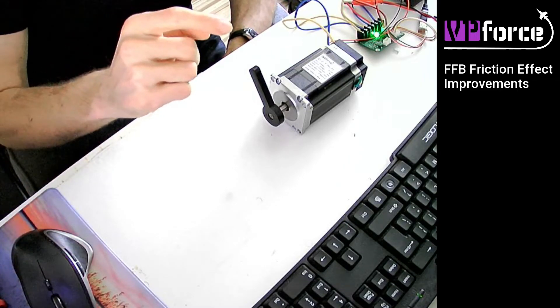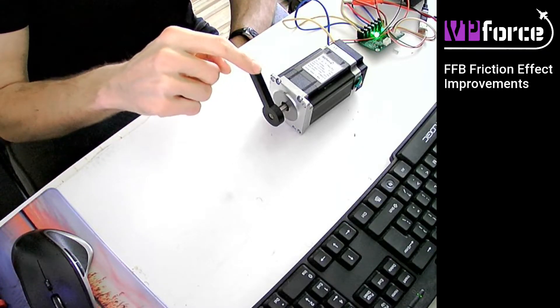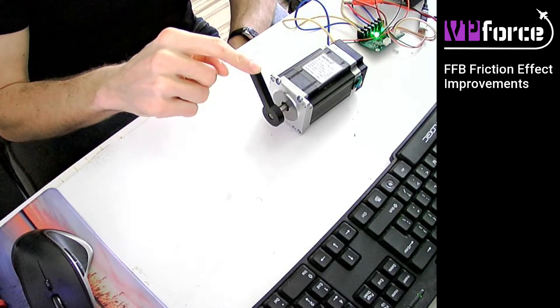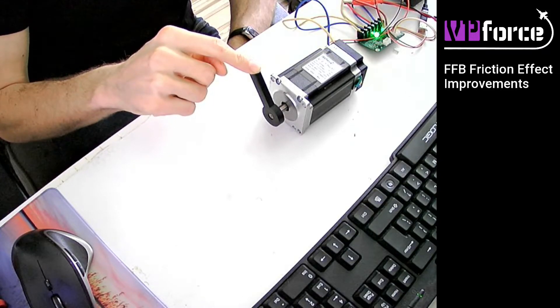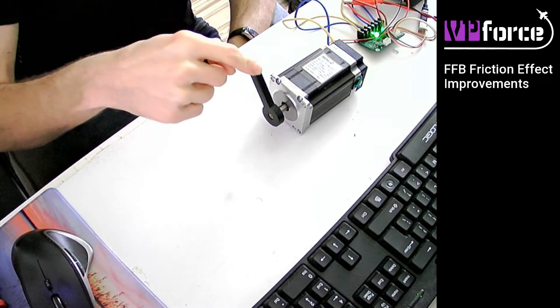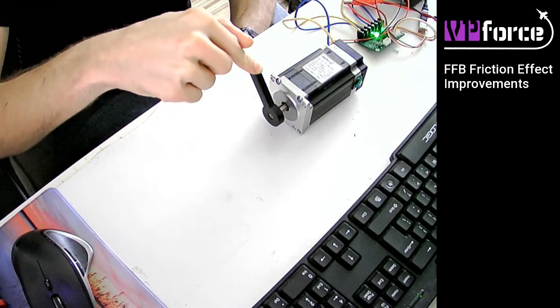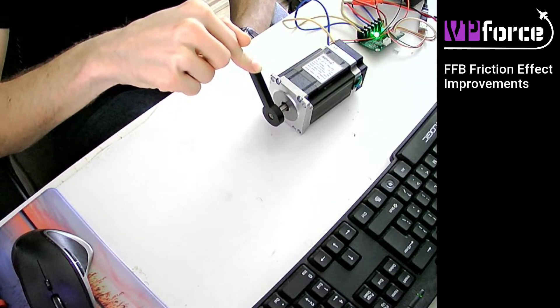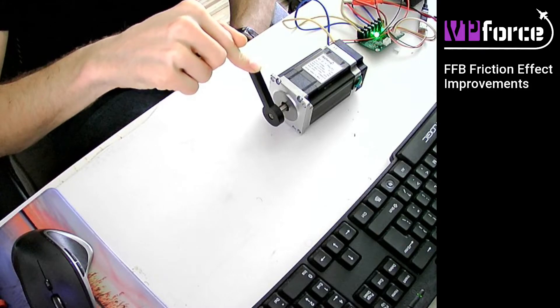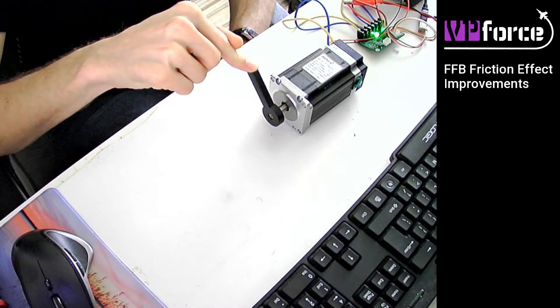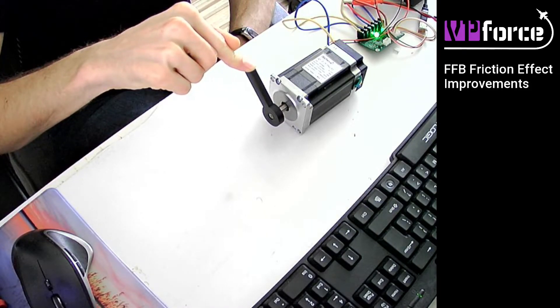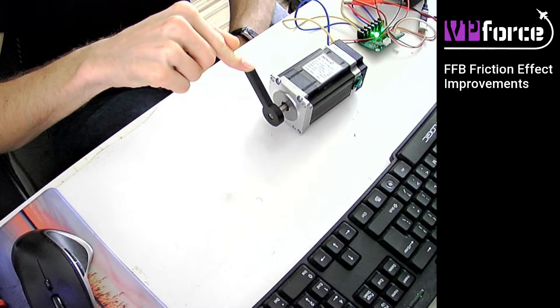And now, if I put some pressure, you can see the motor is staying in the same place. Now, I'll put even more pressure. I have configured the static friction to be quite a high value at the moment. So you can see, it still holds.